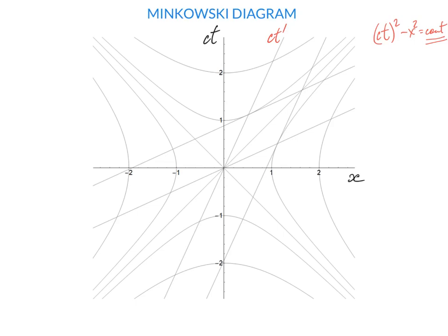It's easy to see that the x prime axis has to be this line. Why is that? The speed of light is the same in all reference frames, so ct prime and x prime should be the same for the light ray. When seen in reference frame k prime, the corresponding world line will be represented using x prime and ct prime coordinates. So the light ray has to bisect these two lines.